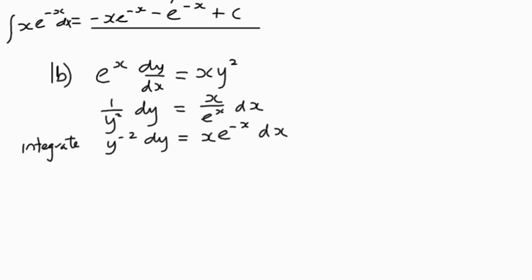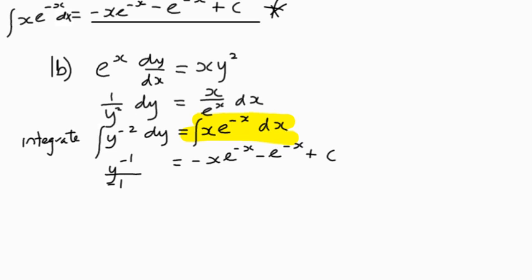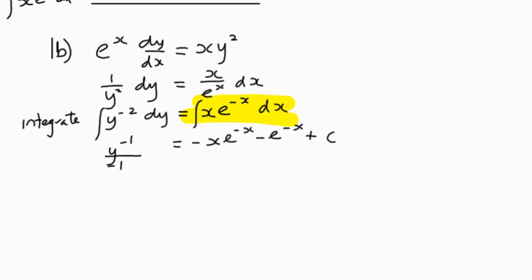And if we integrate, then you can see on the left-hand side, we've got something that we can manage that becomes y to the negative 1 divided by negative 1 equals, well, here we've got our integral that we worked on earlier on. We have to use integration by parts, and we've already worked out up here that the answer to that is negative x e to the negative x minus e to the negative x plus c. So we're really saying here that we've got negative 1 over y is equal to negative x e to the negative x minus e to the negative x plus c.